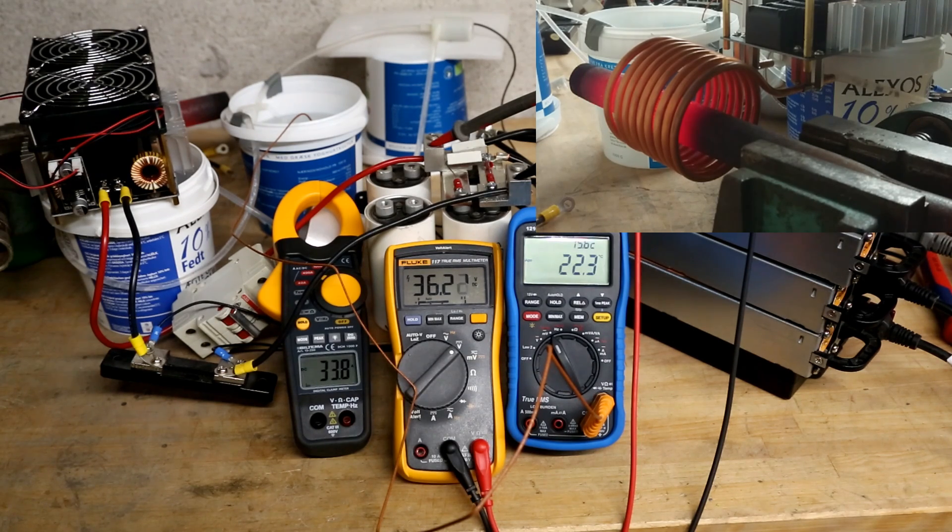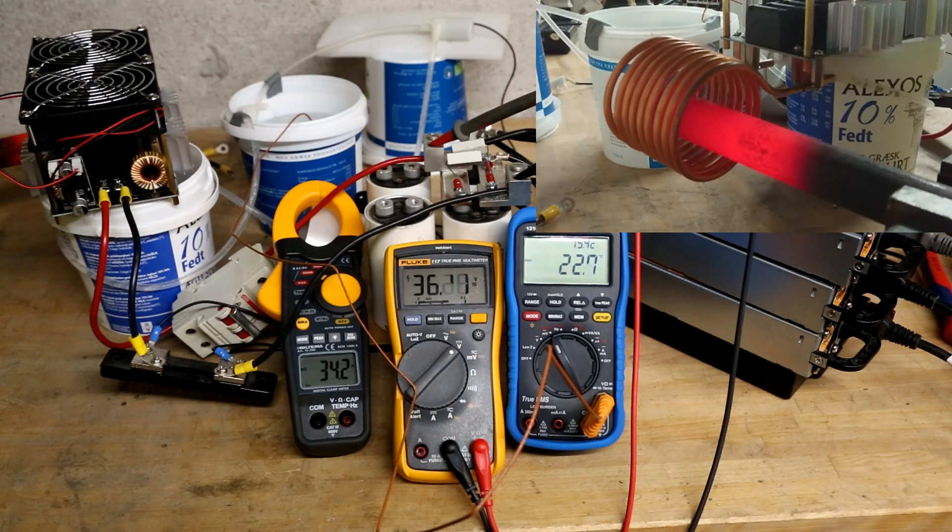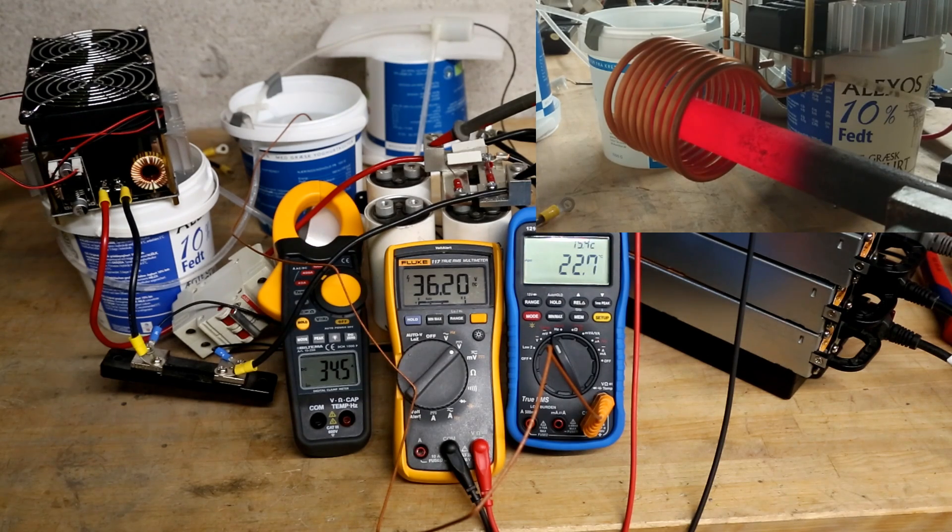I don't know if you could hear that, but it is the fans of the induction heater that goes up and down in speed. I am not sure if it is just the fan controller acting up a bit weird, because the voltage supply is certainly stable.